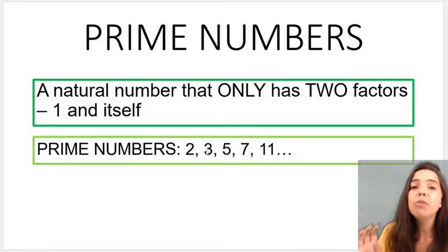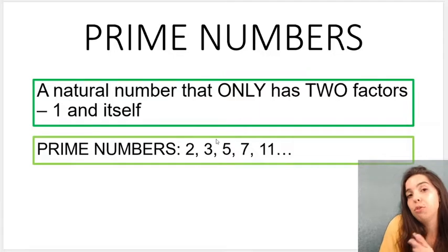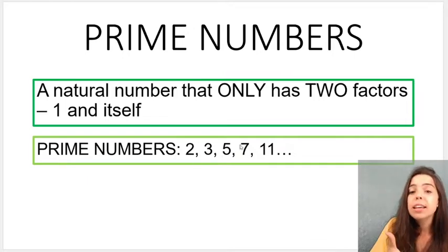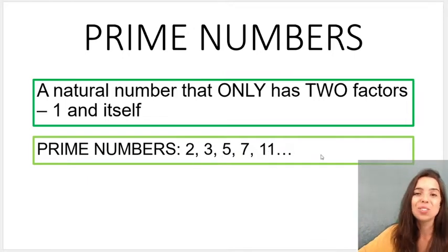Prime numbers: the very first prime number and also happens to be the first even prime number is number 2. You'll see that a lot of the prime numbers are odd. So it goes 2, 3, 5, 7, 11, 13, and so on.